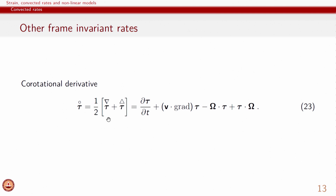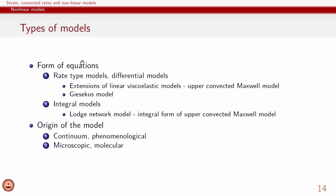When we add the upper and lower convected derivatives, we get what is called the co-rotational derivative, because instead of the velocity gradient, the terms due to deformation involve the spin tensor or rotational part — that is why it is called a co-rotational derivative. This derivative is also frame invariant and can be used. So, wherever in linear models we had the partial derivative, that has to be replaced with one of these nonlinear frame-invariant derivatives to get a model that can describe nonlinear rheological response.